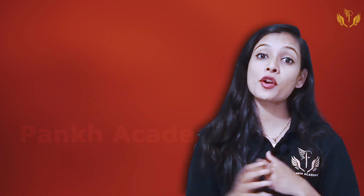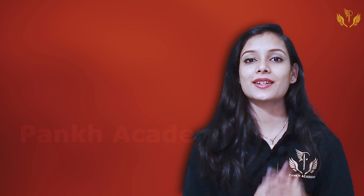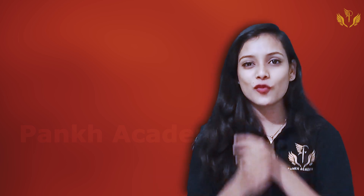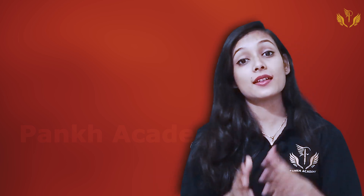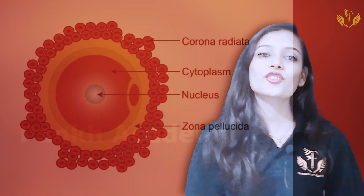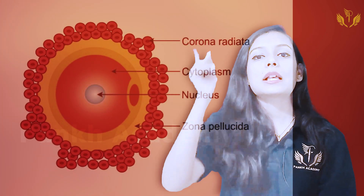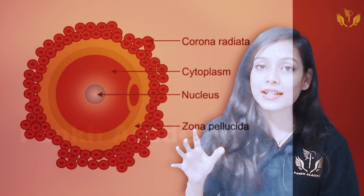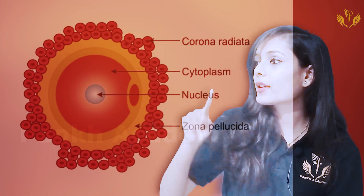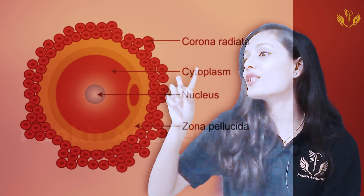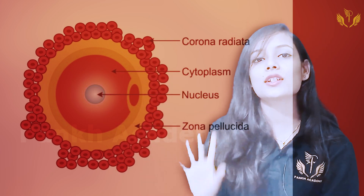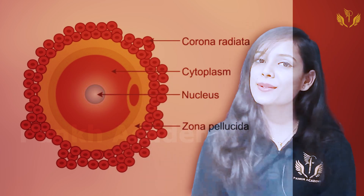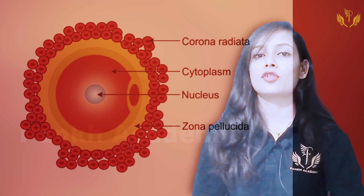Now, if we have to draw the structure of the ovum, here is how it looks. The most important outermost layer is the corona radiata. Inside that is the zona pellucida, then the cytoplasm, and then the nucleus at the center. That is the complete structure of the ovum — simple and straightforward.